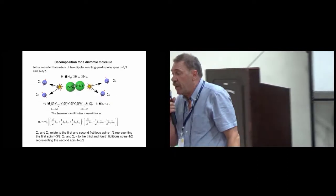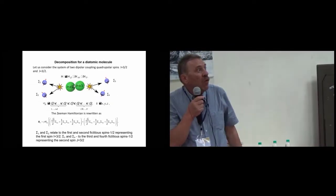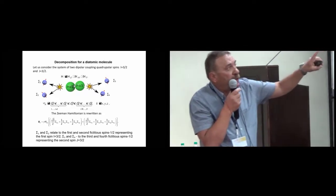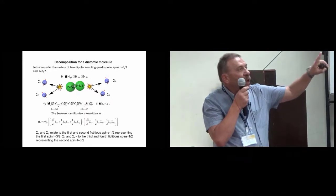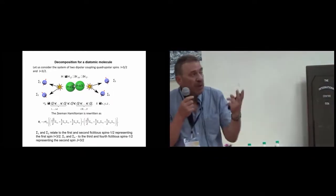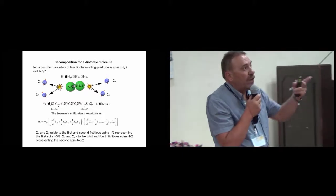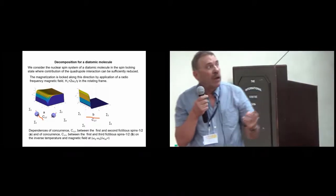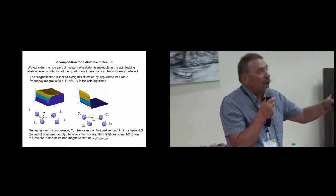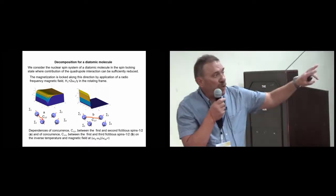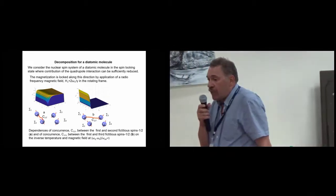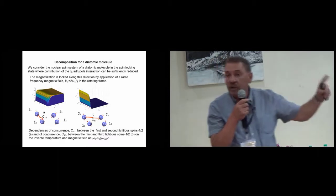Last example, we present a dimer molecule which contains two coupled spin three-halves. Now we have four fictitious spins. Once more we calculate concurrence between various pairs of fictitious spins, so entangled states we can realize.